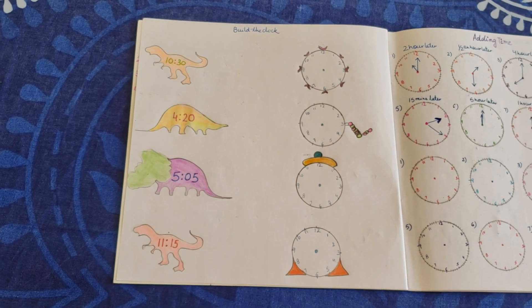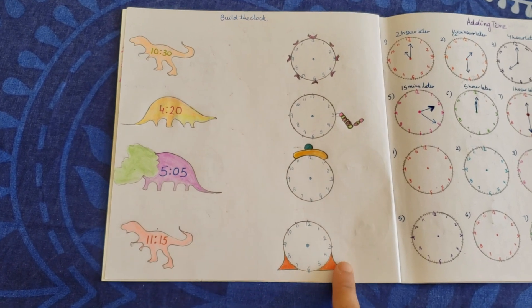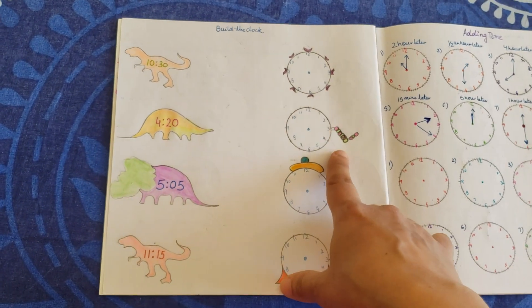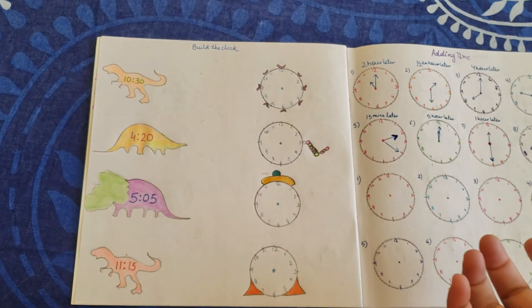Next is build the clock. You have four dinosaurs here who are telling you the time and you have to make the same time here. If it says 4:20, you have to make 4:20 here with the hour hand and the minute hand.